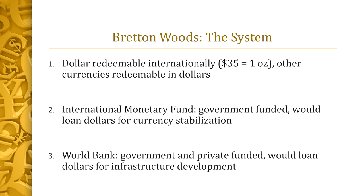Just so we know what Bretton Woods was: it was the system created right around the end of World War II and it lasted until the early 70s. It helped establish the dollar as the world reserve currency. The dollar was redeemable internationally in gold by large banks and governments — $35 would buy an ounce of gold. Other currencies were redeemable in dollars, so the United States currency was, in a sense, the reserve for all other currencies of the free capitalist world — Europe, Japan, etc. This created an enormous demand for dollars.